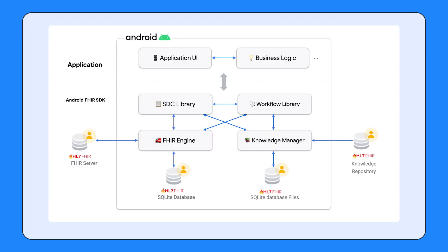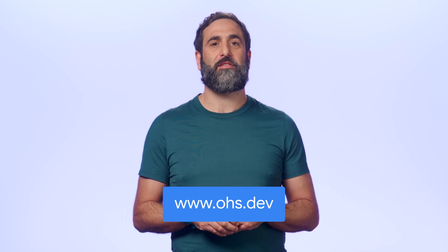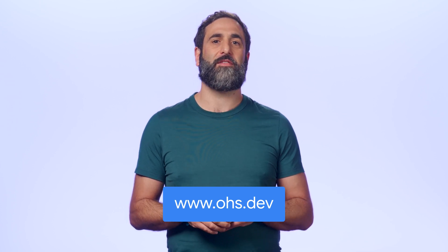The Android FHIR SDK libraries are designed with the separation of concerns in mind. Each library handles a specific set of features, so your application can pick and choose the libraries you need. For example, you might have an application that only uses the SDC library, or you might have an app that uses all of them. With these libraries, developers can build applications for a range of use cases — from simple data collection, to care coordination, or supporting health workers to deliver person-centric, evidence-based recommendations from locally adapted WHO Smart Guidelines. You can read some of the stories of how developers are using the Android FHIR SDK today on our developer site.